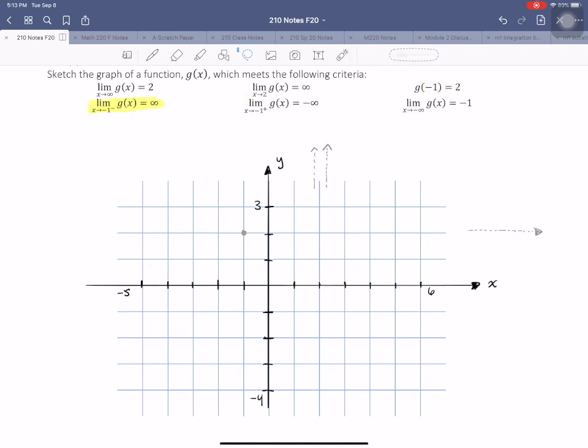So our fourth criteria is x approaches negative 1 from the left, so in this direction, we want our function to grow without bound.